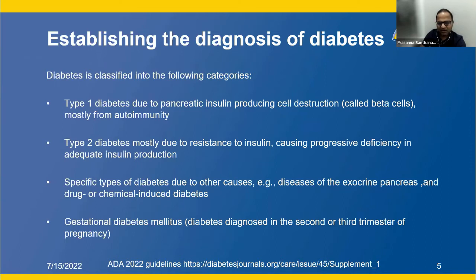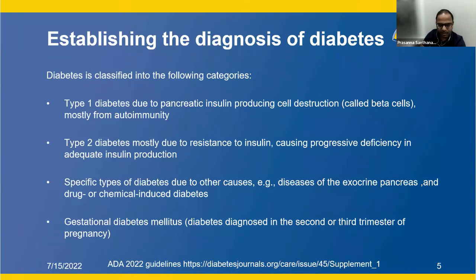Type 1 occurs in around 5 to 10 percent of all cases of diabetes, but the majority is type 2, which is the epidemic all over the world. Type 2 diabetes is mostly due to insulin resistance caused by progressive deficiency in adequate insulin production. There are also other kinds including diseases of the pancreas, drug and chemical-induced diabetes, and diabetes in pregnancy during the second and third trimester.